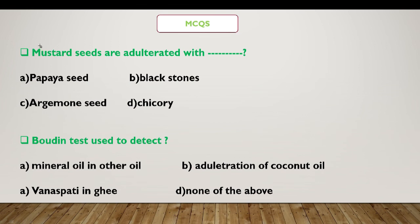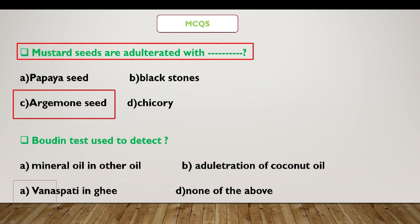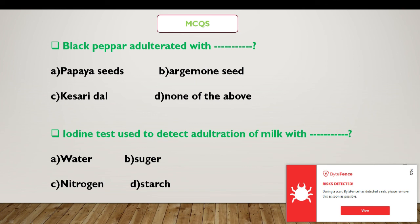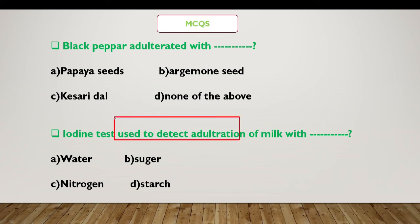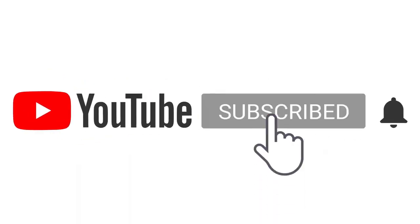Let us solve some selected MCQs on food adulteration. Question 1: Mustard seeds are adulterated with — options: papaya seeds, black stones, argemone seeds, or chicory. The correct answer is C, argemone seeds. Question 2: Refrigeration test is used to detect mineral oil in other oil, adulteration of coconut oil, vanaspati ghee, or none of the above. The correct answer is C, vanaspati ghee. Question 3: Black pepper is adulterated with — options: papaya seeds, argemone seeds, kaseri dal, or none of the above. The correct answer is A, papaya seeds. Question 4: Iodine test is used to detect adulteration of milk with — options: water, sugar, nitrogen, or starch. The correct answer is D, starch.